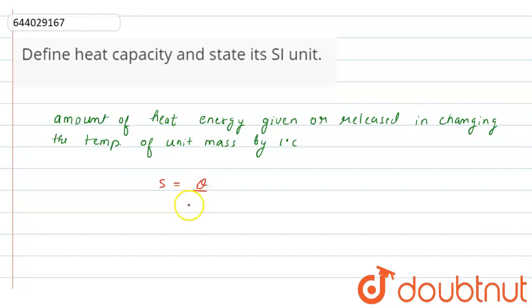Where Q is heat, M is mass and T is temperature, or delta T is change in temperature. And SI unit is joule per kg per degree celsius. Thank you for watching.